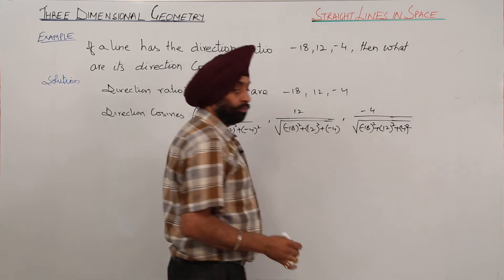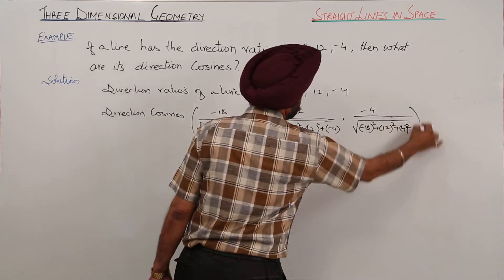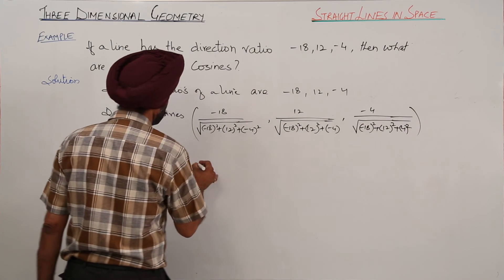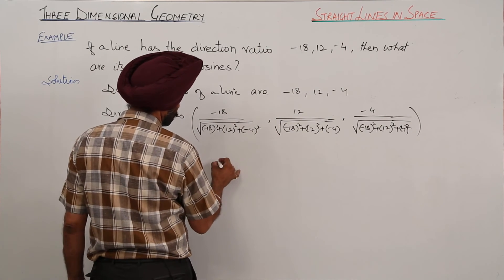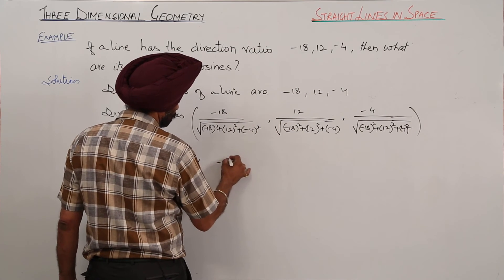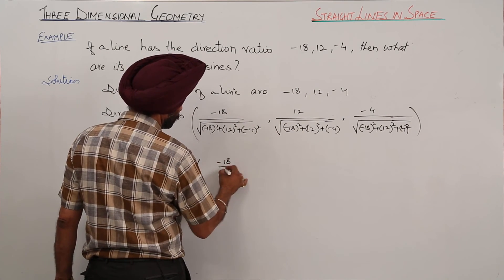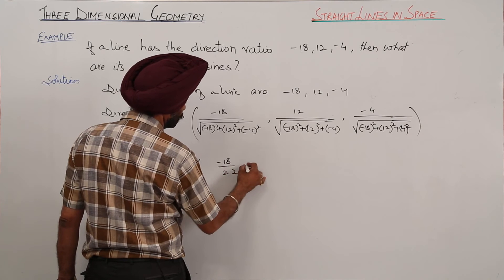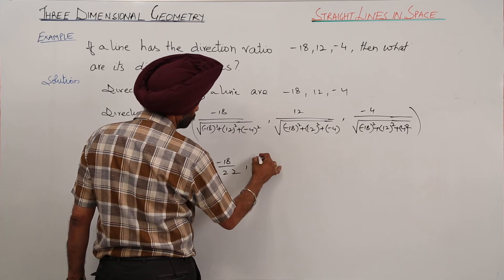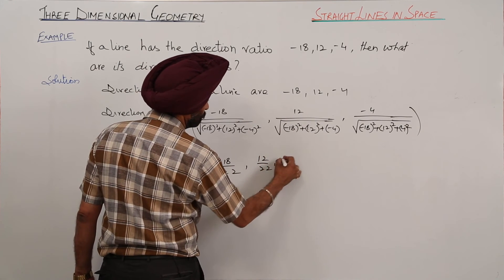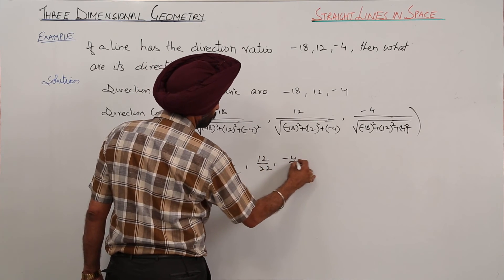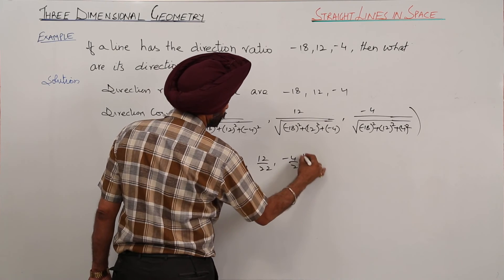This becomes negative 18 upon 22, 12 upon 22, negative 4 upon 22.